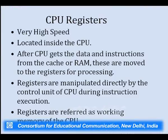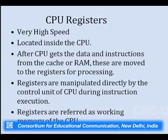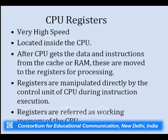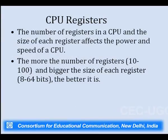CPU registers are very high-speed memory areas located inside the CPU. After the CPU gets data and instructions from the cache or RAM, they are moved to registers for processing. Registers are manipulated directly by the control unit of the CPU during instruction execution, and are referred to as the working memory of the CPU. The number and size of registers affect the power and speed of the CPU — more registers of higher size make a computer system faster and more efficient.